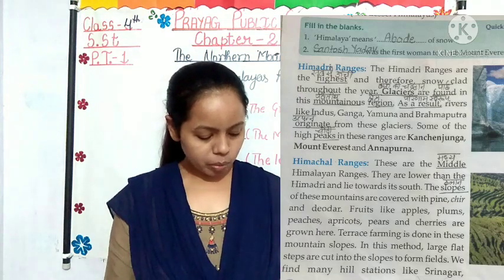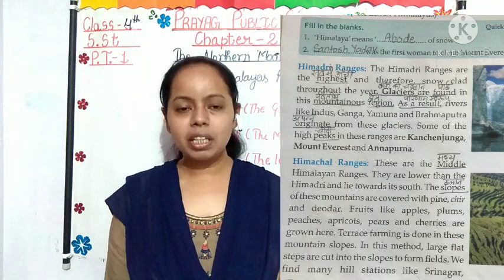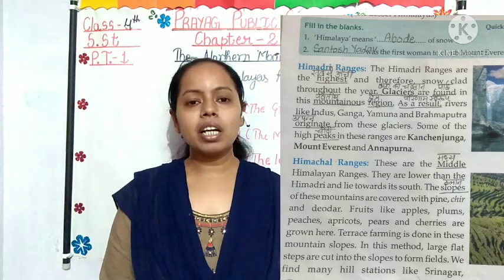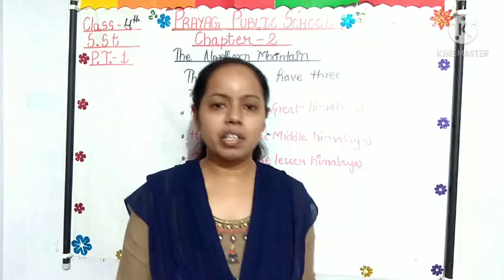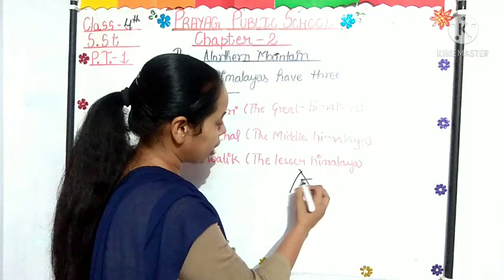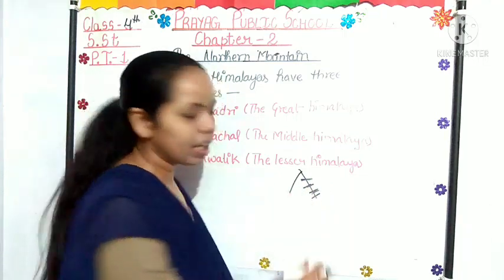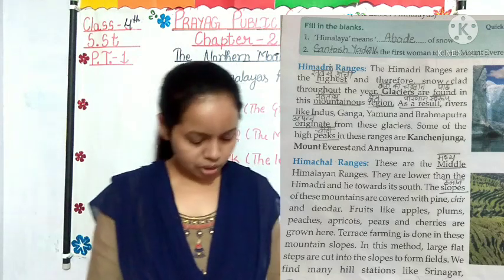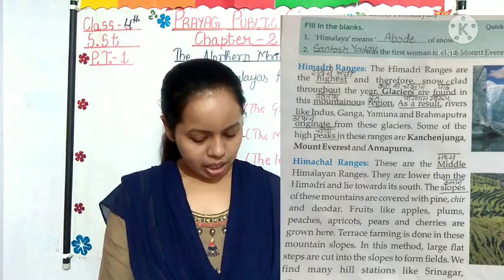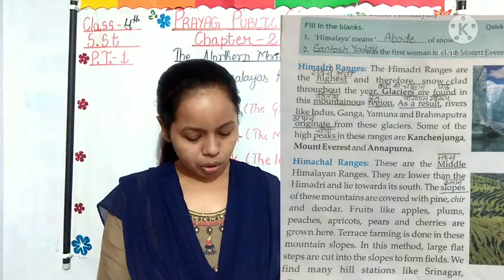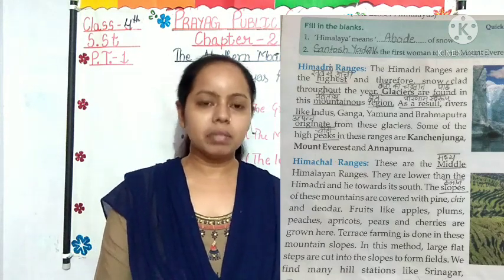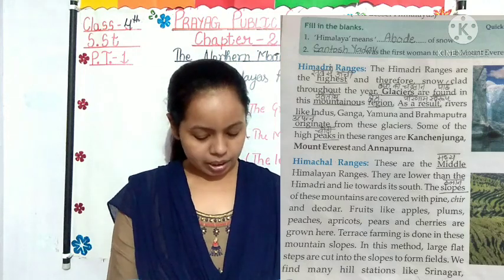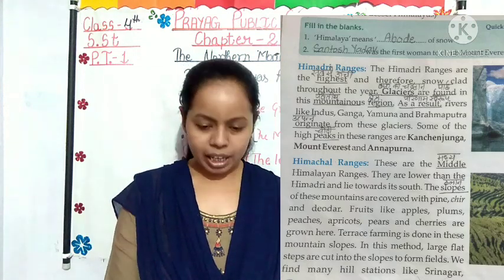Terrace farming is done on these mountain slopes. When we cut the slopes of mountains into steps and do farming on them, this is known as terrace farming. In this method, large flat steps are cut into the slope to form fields. We find many hill stations like Srinagar, Gulmarg, Pahalgam, Dalhousie, Shimla, Kullu, Mussoorie, Nainital and Darjeeling in this range.